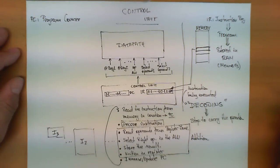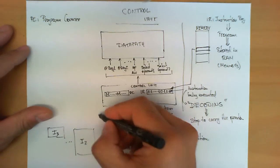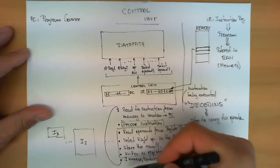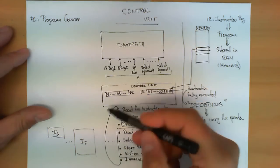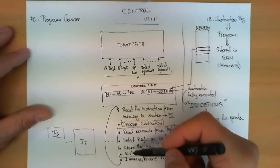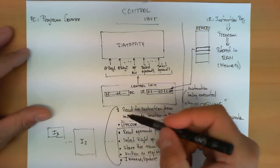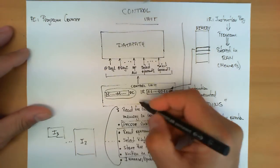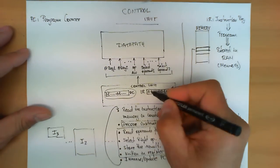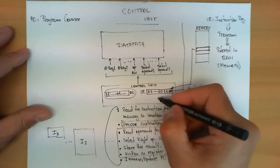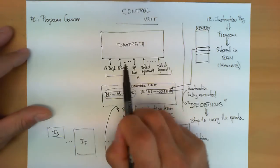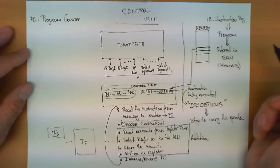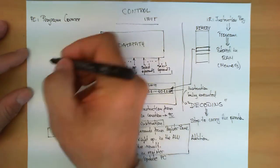The important conclusion to understand exactly what the role of the control unit is: it constantly executes these steps in a loop in an iterative manner. It always needs to rely on the program counter to go to memory, get the next instruction, put it in the instruction register, decode it, find out what it means, and then provide the right signals so that the data path performs the right operation.